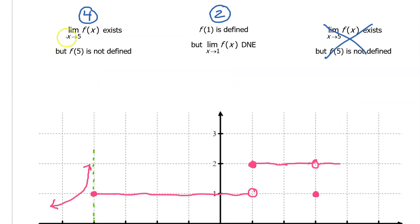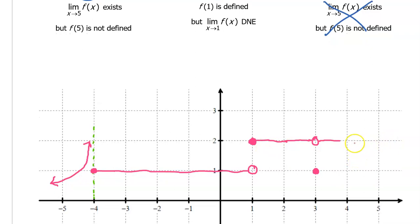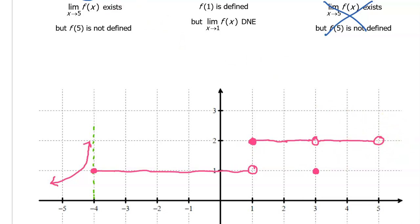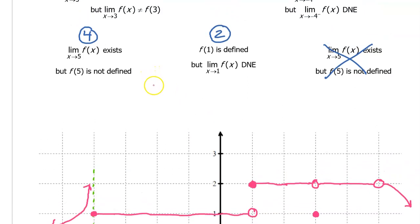The fourth and final condition says the limit as x approaches 5 exists, meaning we approach the same value from the left and right of 5. Also, the value of f at 5 is not defined, so I definitely need an open circle here and won't put a closed circle anywhere else, leaving the function undefined at 5. That's the final answer for problem E.